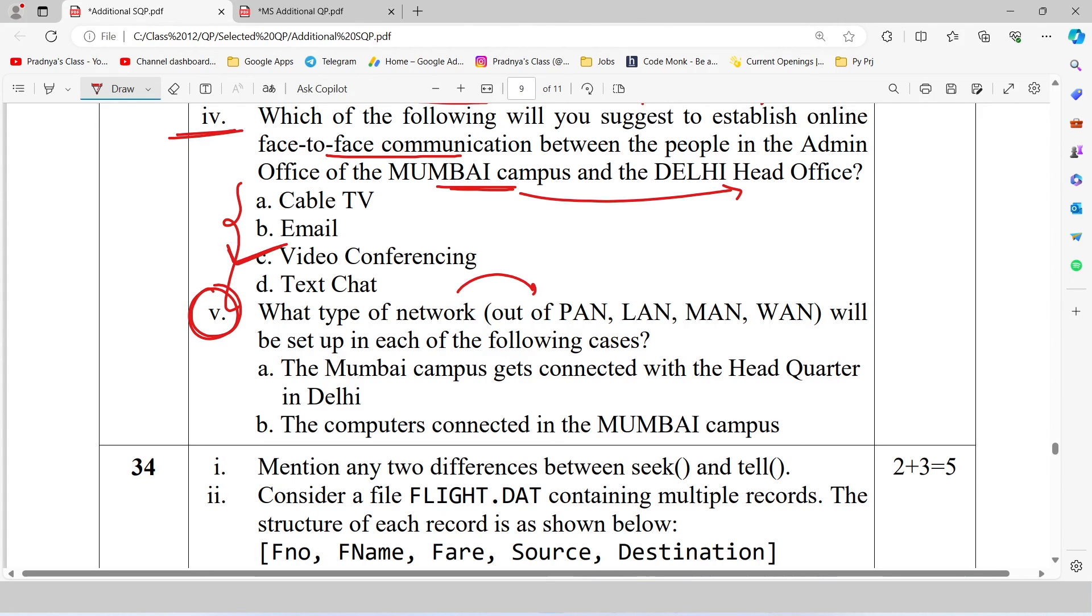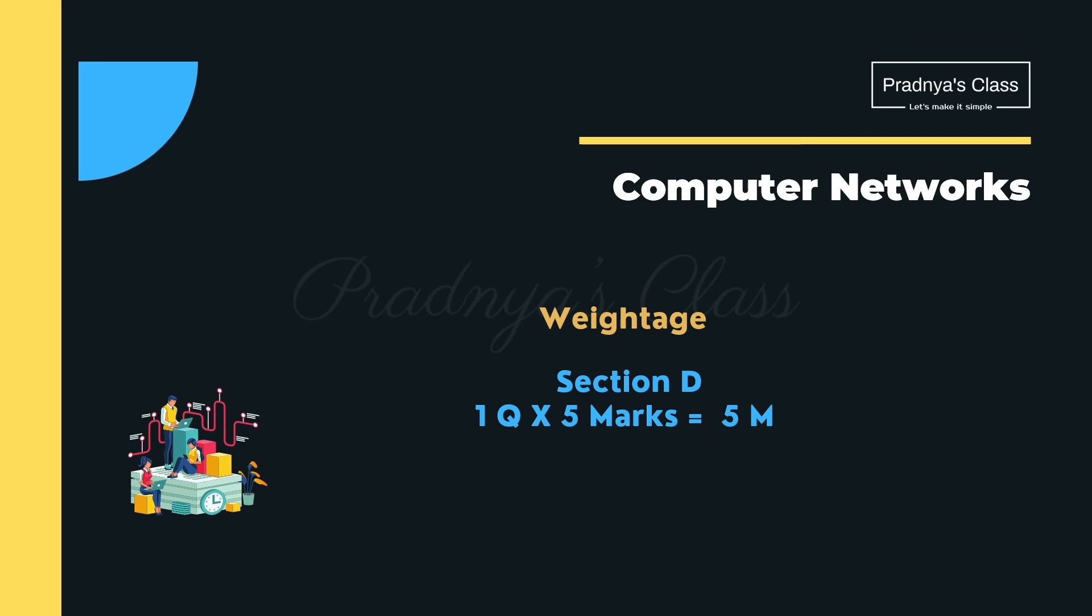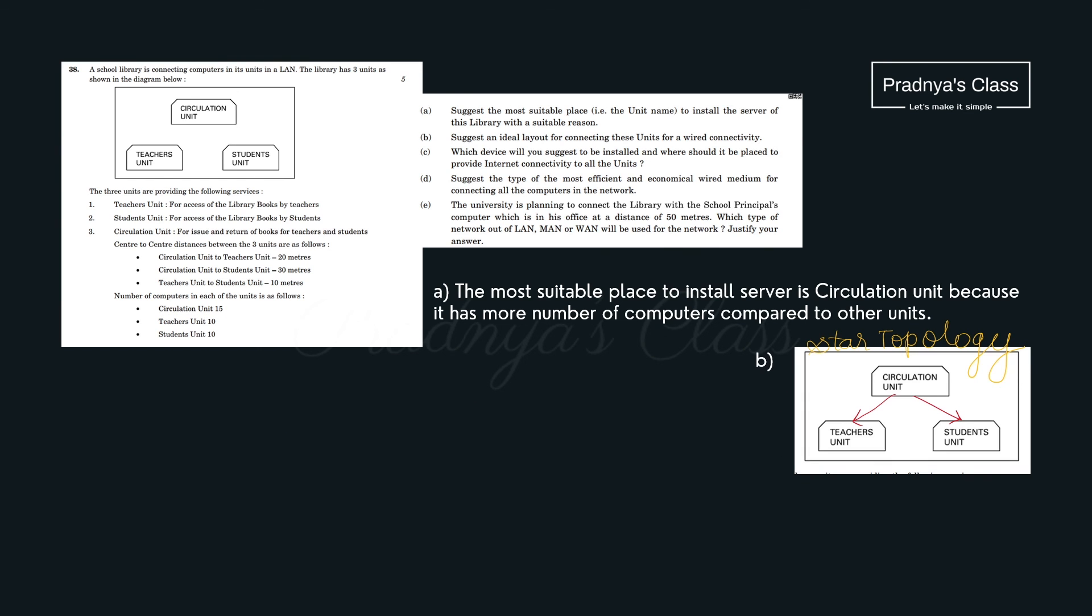Moving ahead to the last question. Which type of network out of these mentioned four will be set up in each of the following cases? Let's read the first case. The Mumbai campus gets connected with the headquarter in Delhi. These are two different cities. So we will be going ahead with WAN. And let's check out the second case. The computers connected in Mumbai campus. It is within the city. If it is within the city, we will go ahead with MAN. There are lot of 5 marks questions also covered in this video. So make sure to check out all the questions.